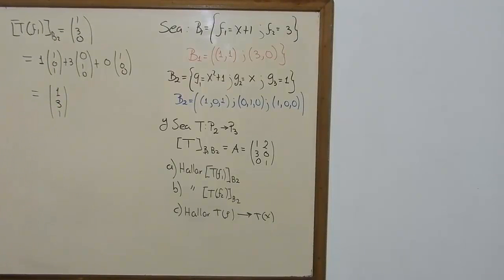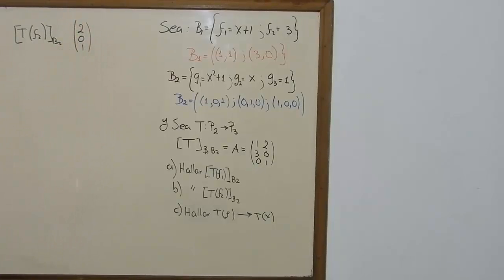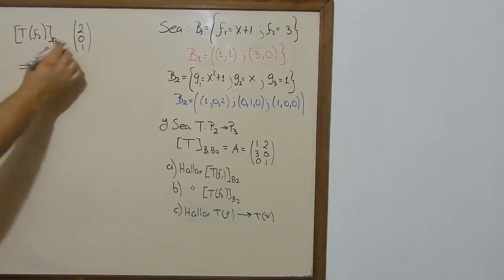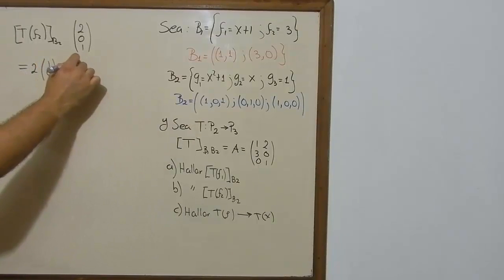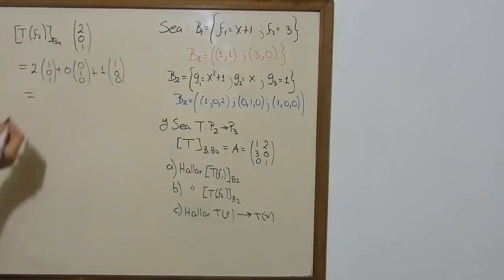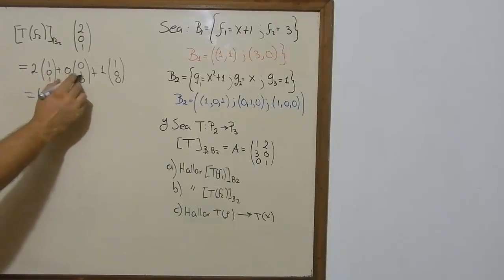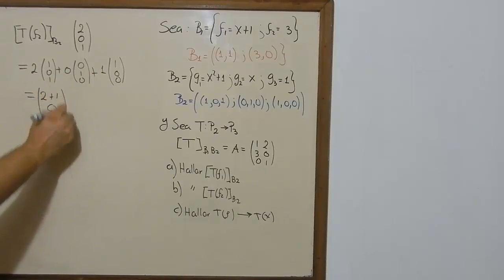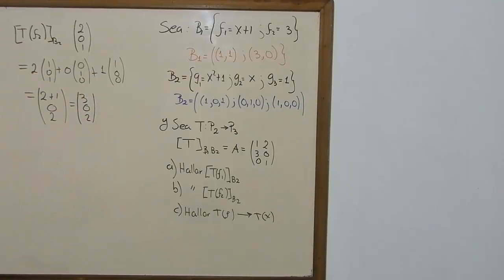Now we need to find the linear transformation of f2 on Base 2. For this, we take the second vector of the transformation matrix and use those values as the constants of the linear combination of Base 2. We take 2 times the first vector [1,0,1], plus 0 times the second, plus 1 times [1,0,0] (the last vector of B2). Computing: 2×1 + 0 + 1 = 3; the second row gives 0; and the third row gives 2. So the linear transformation of f2 on Base 2 is [3, 0, 2].